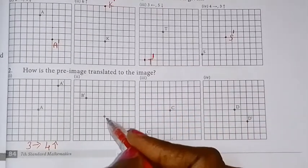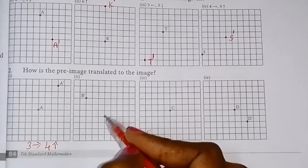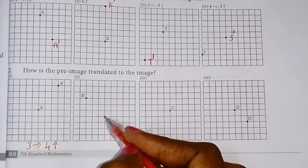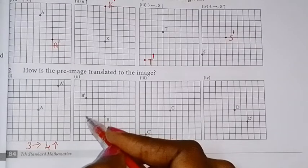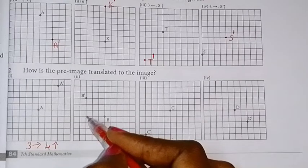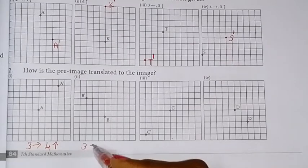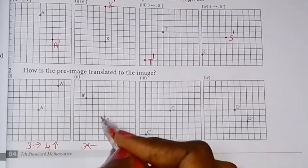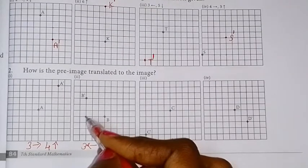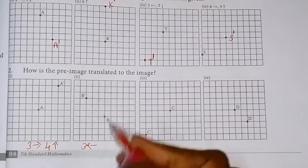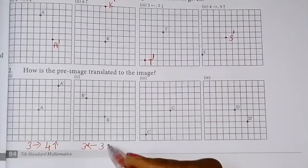Now B'. So, 1, 2, 3. So 3 units left side. So left side: 1, 2, 3. So 3 units upwards.